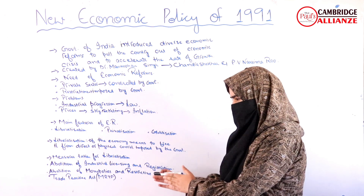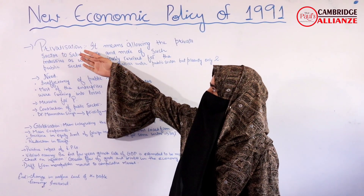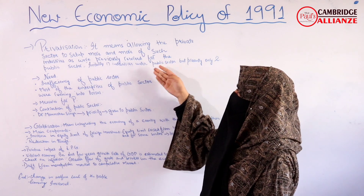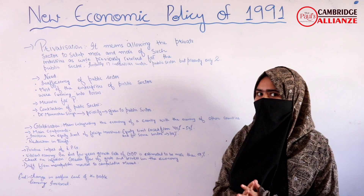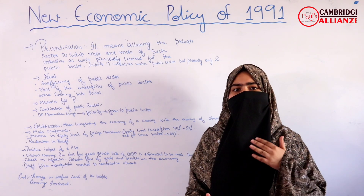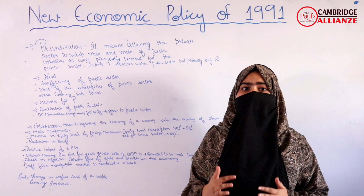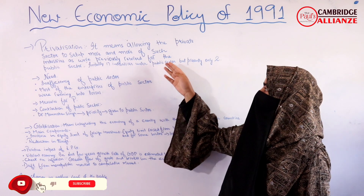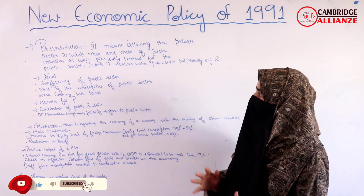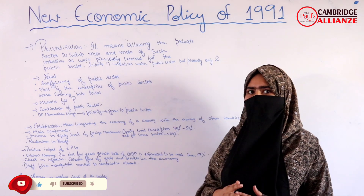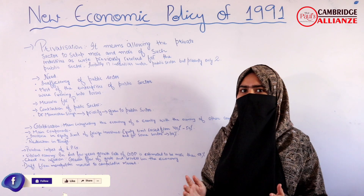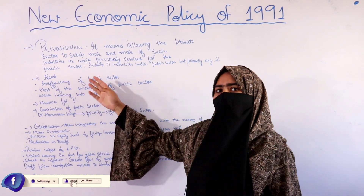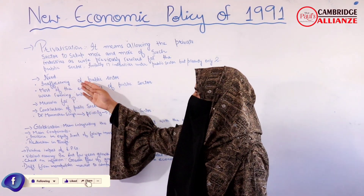Now we will move to the next topic: privatization. It means allowing the private sector to set up more and more industries that were previously reserved for the public sector. Previously, seventeen industries were under the public sector, but presently only two industries remain under the public sector: atomic energy and railway transport.